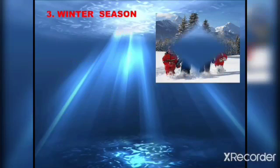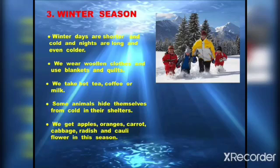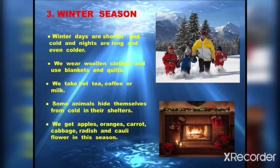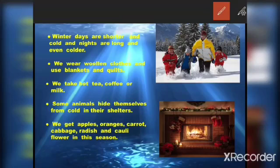Winter season: winter days are shorter and cold, and nights are long and even colder. We wear woolen clothes and use blankets and quilts. We take hot tea, coffee, or milk to keep ourselves warm. Some animals hide from the cold in their shelters or underground burrows. We get apples, oranges, carrots, cabbage, radish, and cauliflower in this season. In the coldest parts of our country, there is snowfall in winter, and people who live there light fires to keep themselves warm.